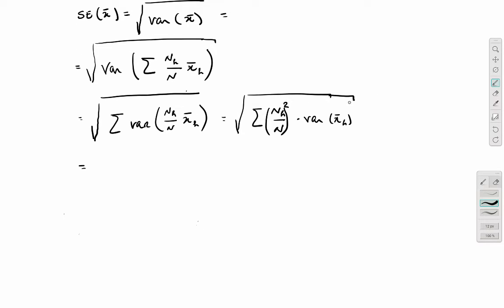Now, we know from previous chapters the variance of the estimator, of the mean estimator in a random sample. So we can substitute this by the variance of that estimator. So this is going to be the sum of NH over N squared, and the variance of this estimator is given by the population variance for stratum H divided by the sample size for stratum H, and now the finite population correction.